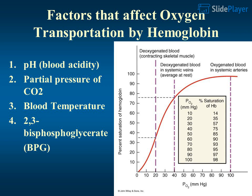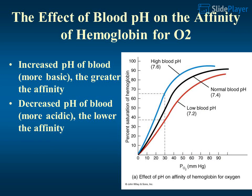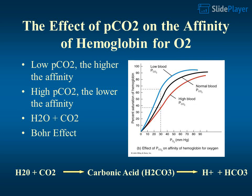The effect of blood pH on hemoglobin affinity for O2: increased pH (more basic) results in greater affinity; decreased pH (more acidic) results in lower affinity. The effect of pCO2 on hemoglobin affinity for O2: low pCO2 results in higher affinity, while high pCO2 results in lower affinity.